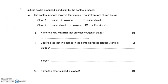Now let's go through question 2A. Question 2A says the contact process involves four stages; the first two are shown: sulphur plus oxygen forms sulphur dioxide, and sulphur dioxide plus oxygen forms sulphur trioxide. The first part asks you to name the raw material that provides oxygen in stage 1 — the answer is air. If you said that, you get one mark.